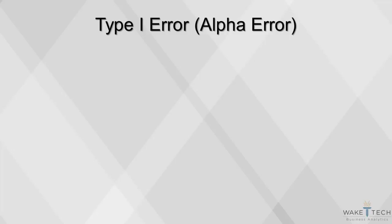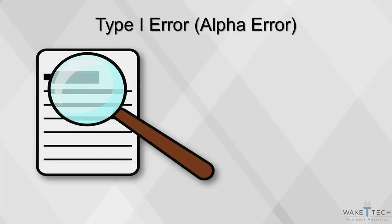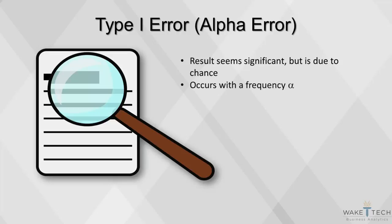The type 1 error occurs when a researcher thinks he or she has found a significant result, but really that result is due to chance. It's similar to a false positive on a drug test. The type 1 error, or the mistake of rejecting the true null hypothesis, will happen with a frequency of alpha.